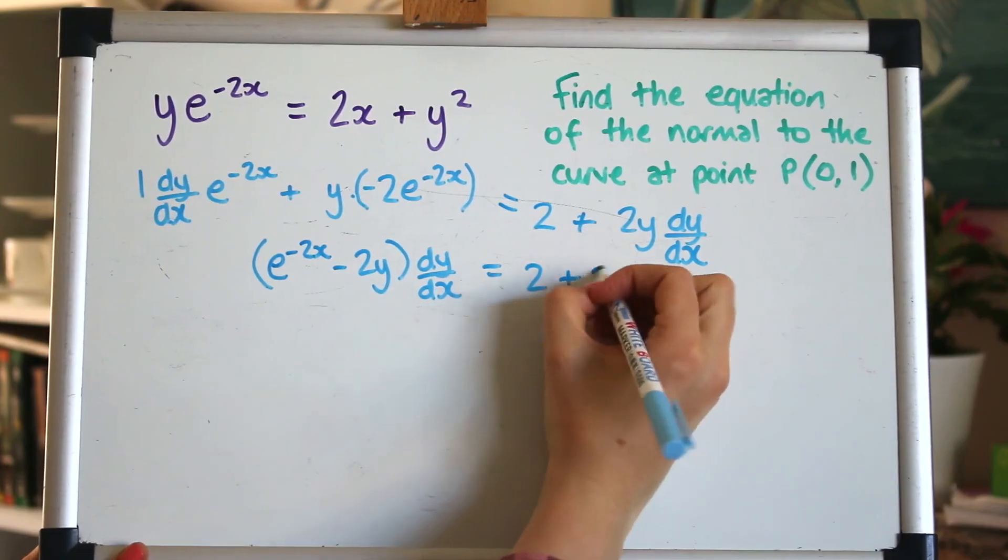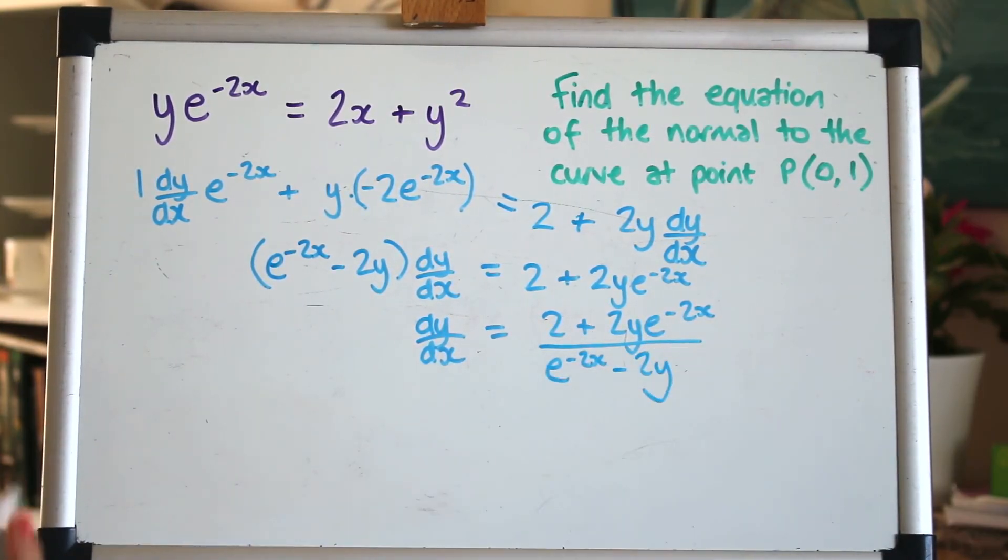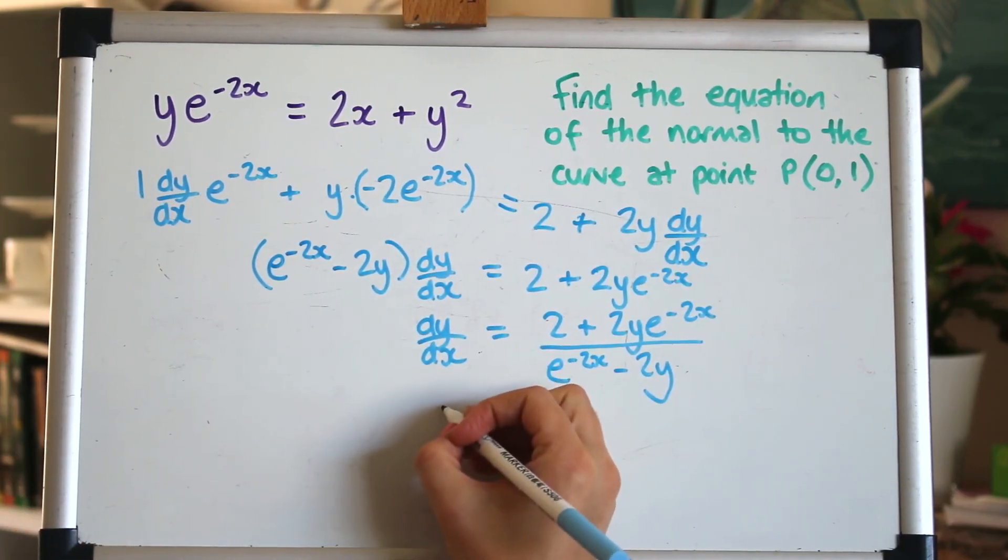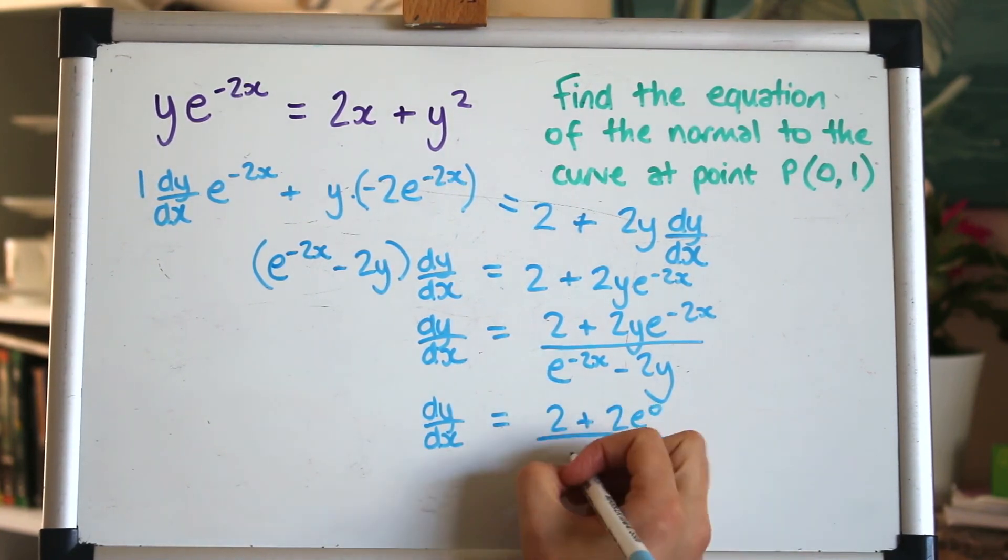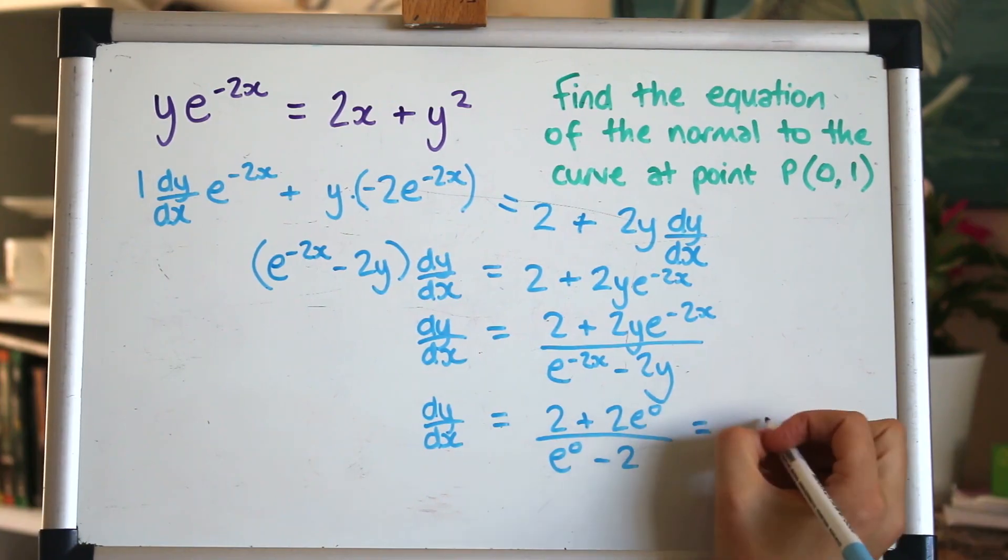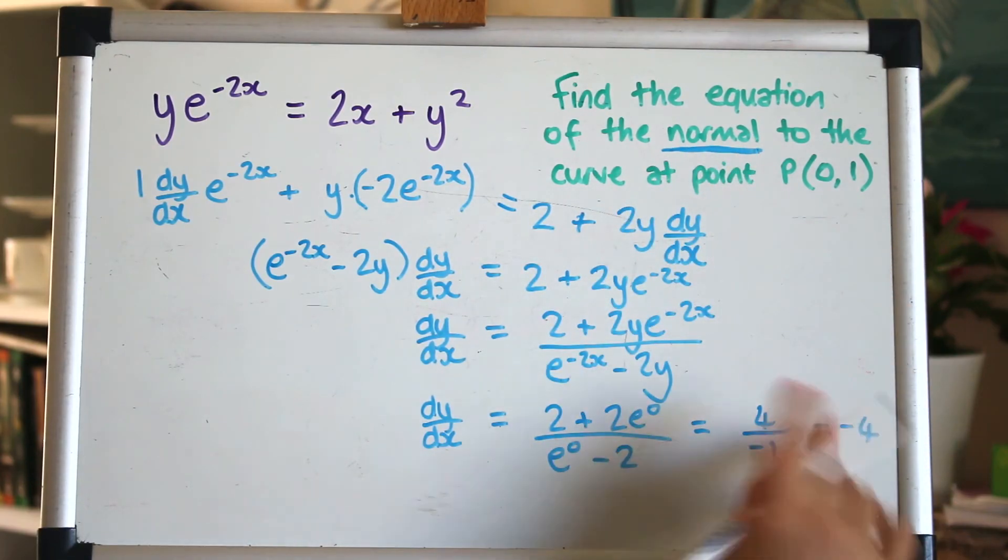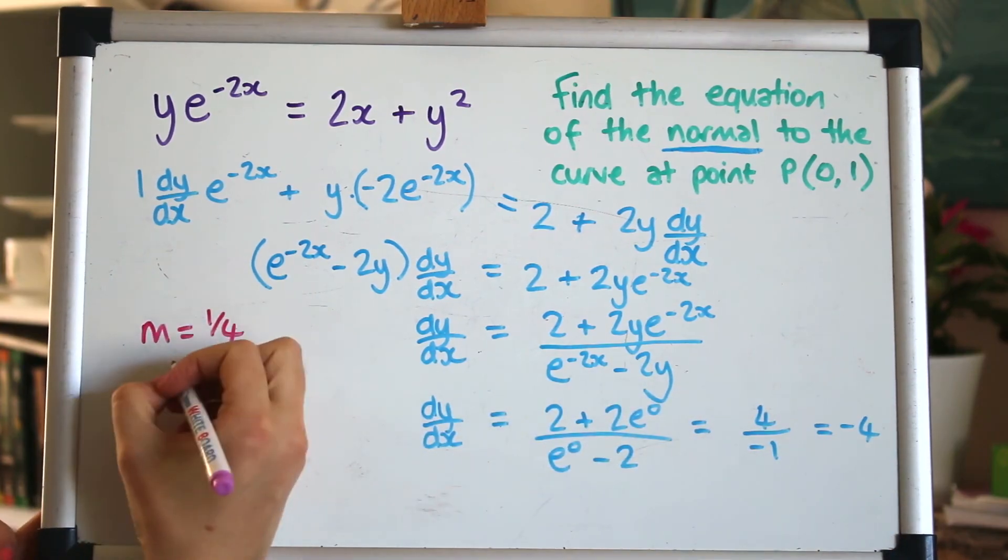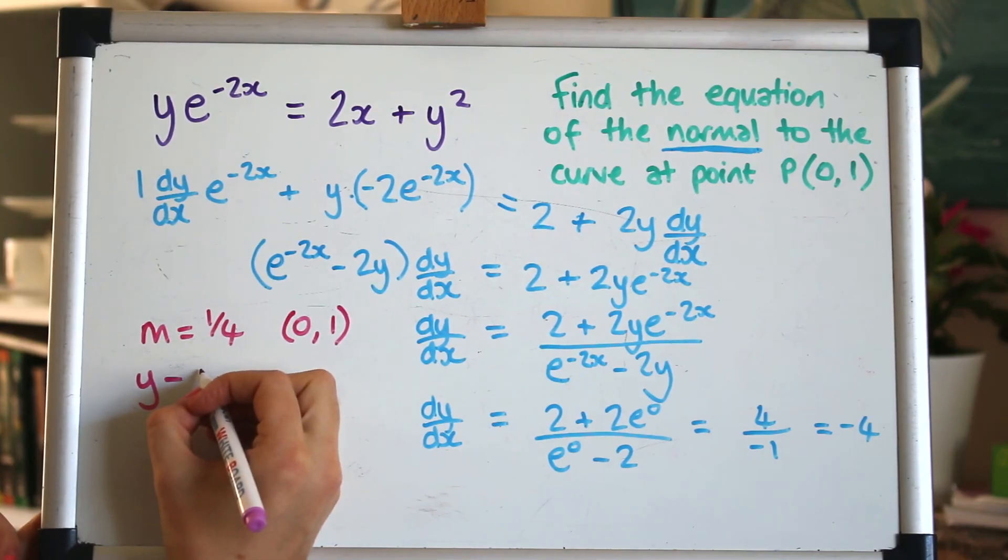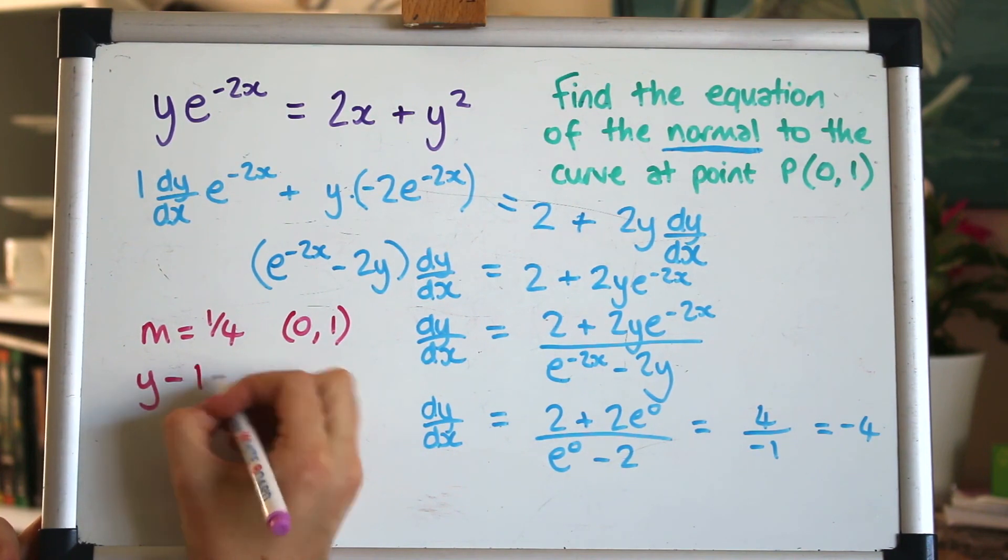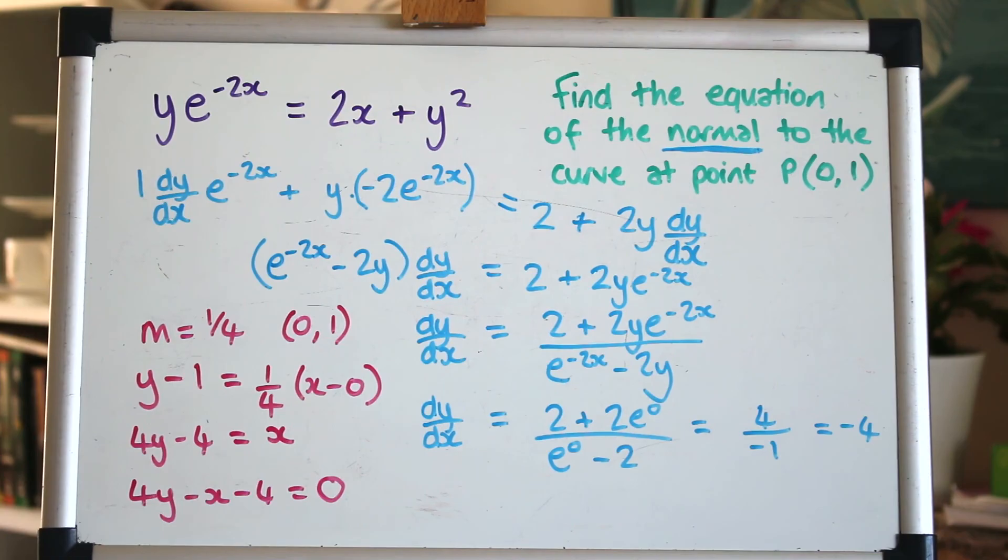And then put the other stuff on the other side. Dividing that down. Then we need the gradient of the normal so we can get the gradient of the curve at this point by substituting in the x and y values 0 and 1. E to the 0 is 1. We want the equation of the normal not the tangent so we need the perpendicular gradient to that so that will be flip it and change the sign so it'll be a quarter. And we know the coordinates it passes through x and y so we can use the y minus y1 equals mx minus x1 or whatever it is you use for a straight line. And that is it.